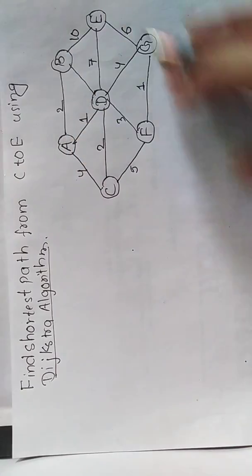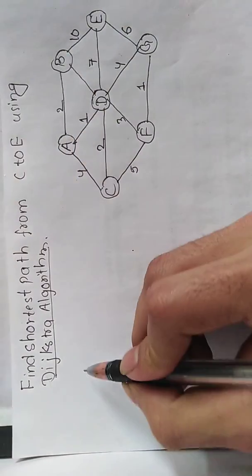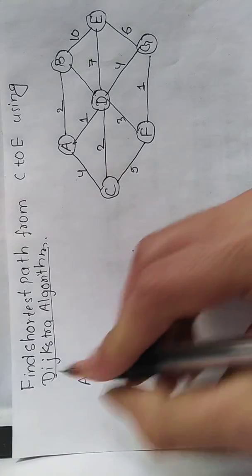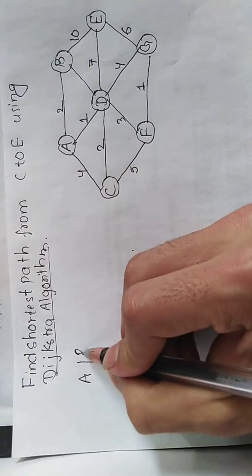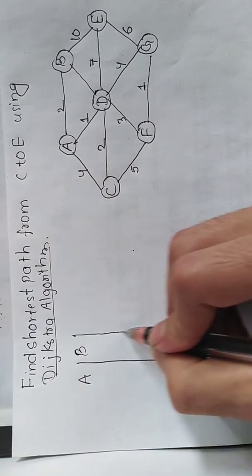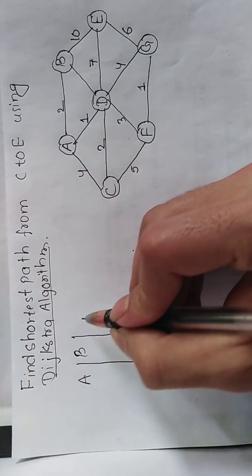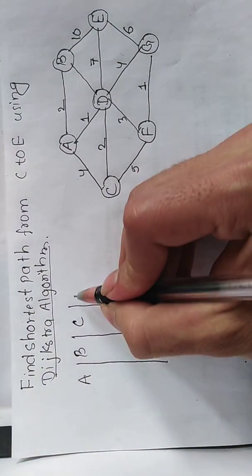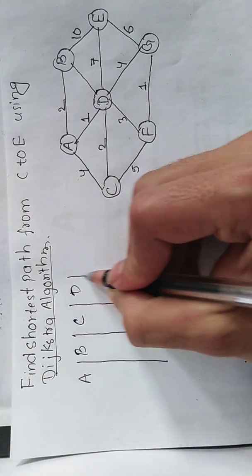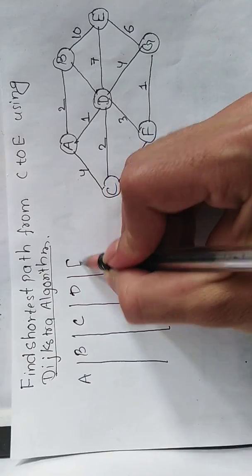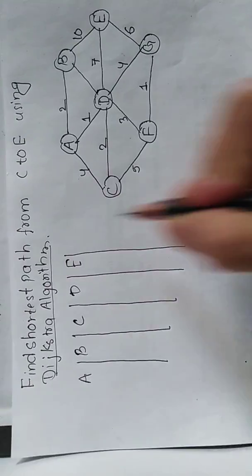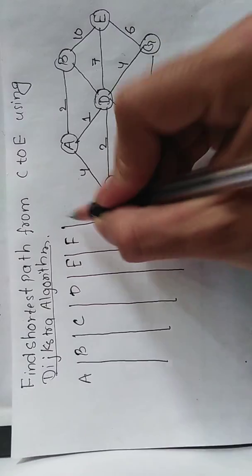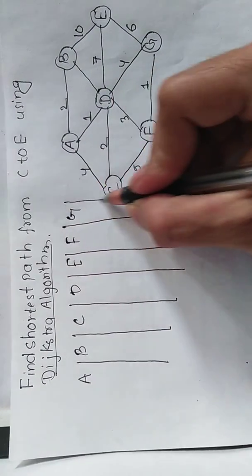The graph has the following vertices: A, B, C, D, E, and G.